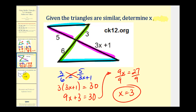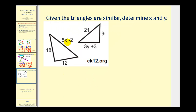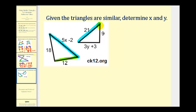Let's take a look at one more. Here we want to solve for x and y, given these two triangles are similar. Let's start by identifying the corresponding sides. Here's the longest side of each triangle. The shortest side corresponds to the side of length nine, leaving us with this side here corresponding to this side here.